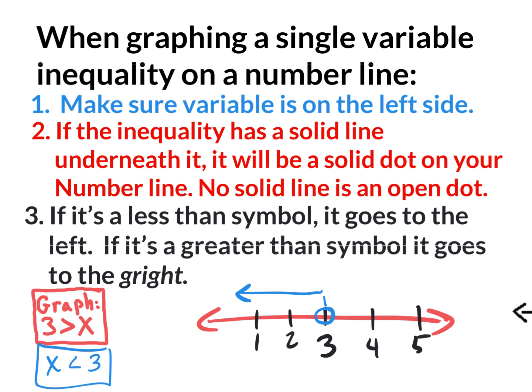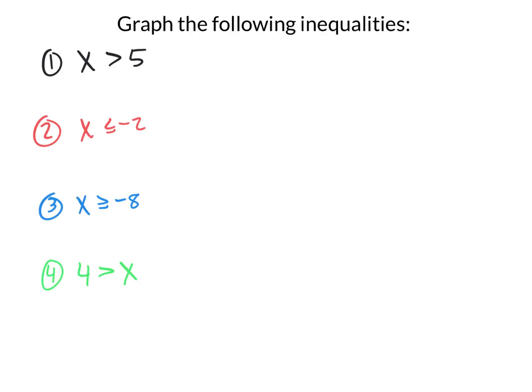I want you to copy these four inequalities down and graph them on a number line: x is greater than 5, x is less than or equal to negative 2, x is greater than or equal to negative 8, and 4 is greater than x — which means you'd have to switch that one. On each one, write it down and do a number line, putting the number you're talking about right in the middle.